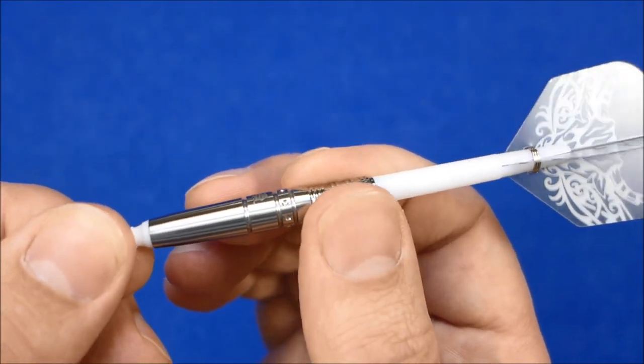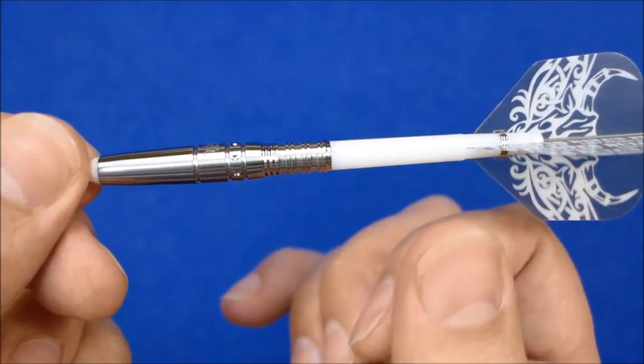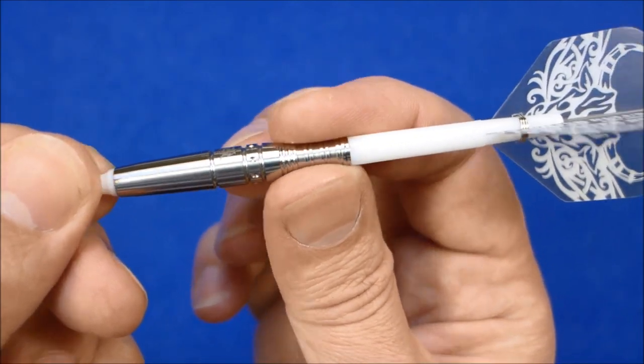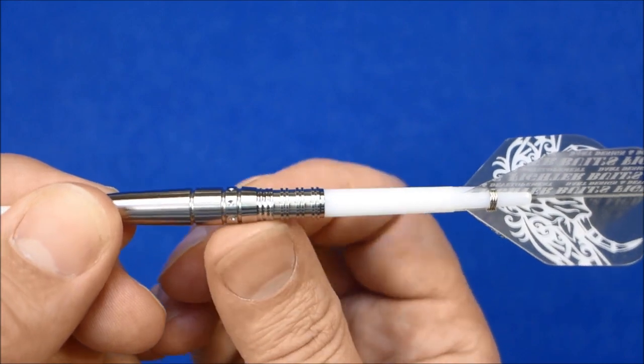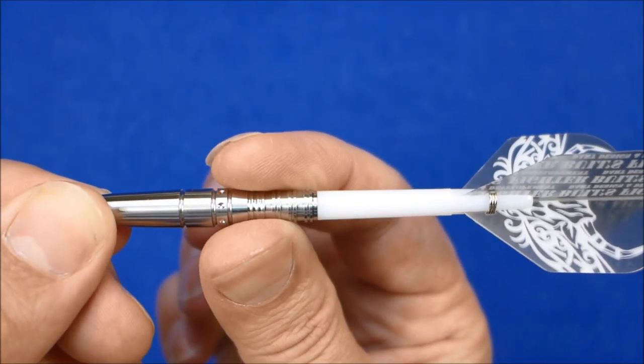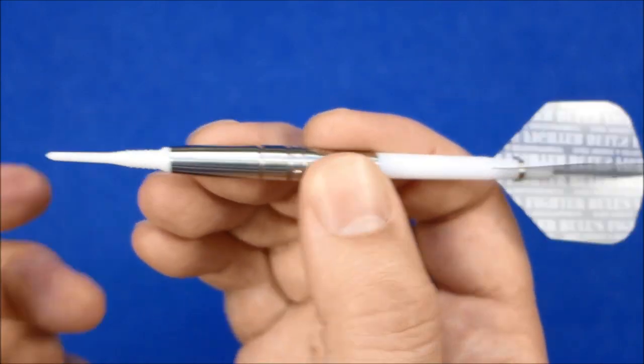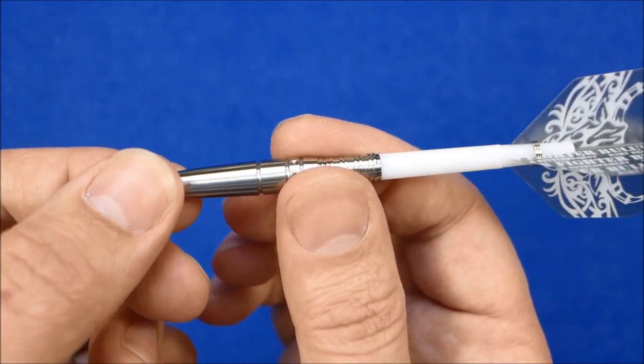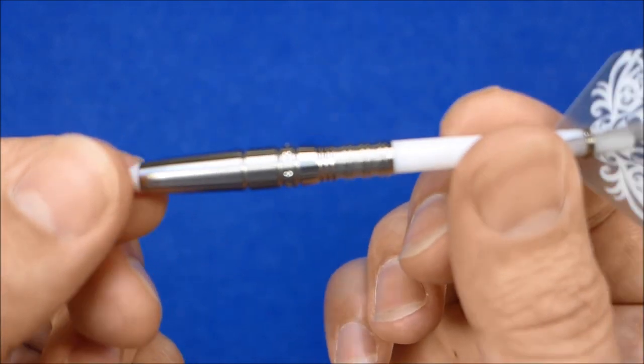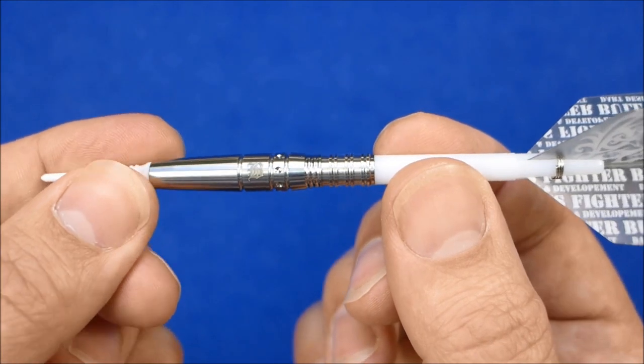And I'd probably say that's a high medium level of grip there but you've got the grip from the rings and you've also got a kind of a slope towards that slightly thicker part so you've got something quite nice to push against. It's a very nice looking dart again. Bulls fighter really makes some nice darts.